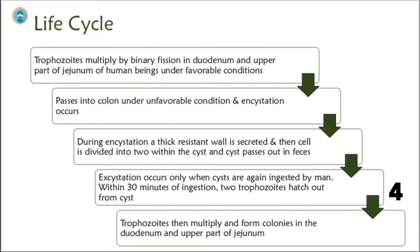Excystation occurs only when cysts are again ingested by humans. Within 30 minutes of ingestion, two trophozoites hatch out from cysts and start their invasion process. Trophozoites then multiply and form colonies in the duodenum and upper part of jejunum.